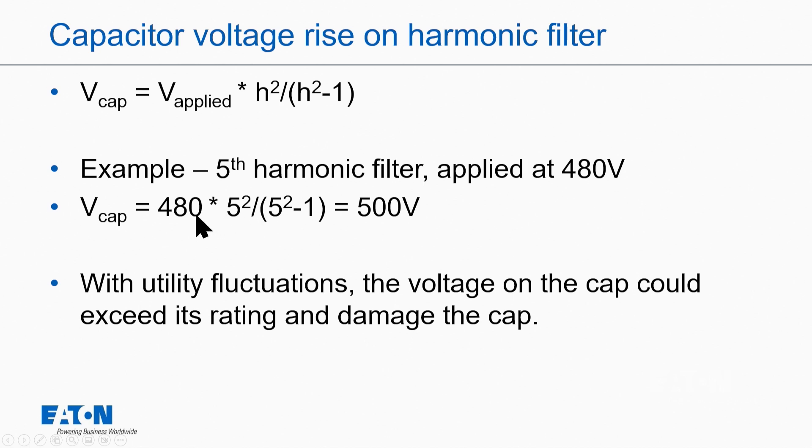So for example, for a fifth harmonic filter, you'd have 480, which is the applied voltage, times five squared over five squared minus one, which gives you about 500 volts.